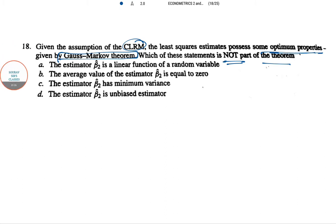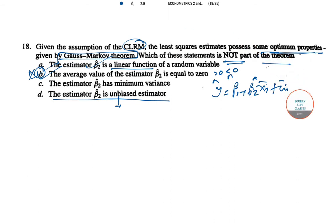The estimator β₂ is a linear function - yes, this is correct. Y = β₁ + β₂Xᵢ + εᵢ. The average value of the estimated β₂ equals zero - this is wrong because it may be positive or negative. The estimator β₂ is unbiased - this is correct. Option B is the answer.